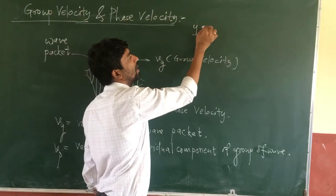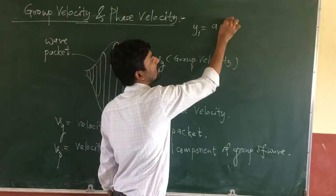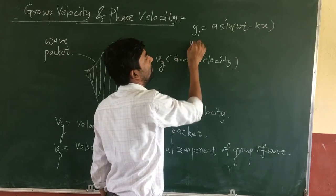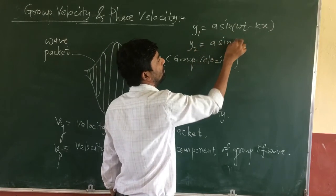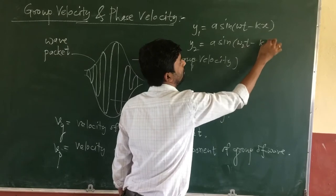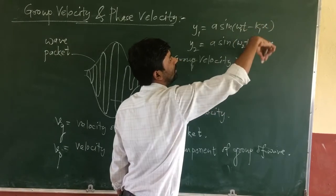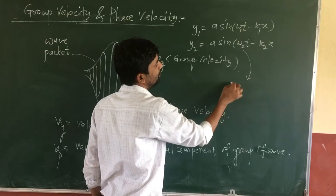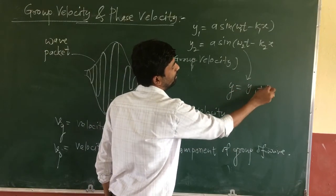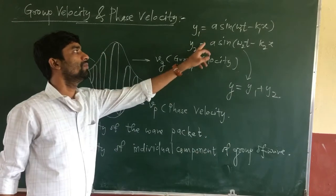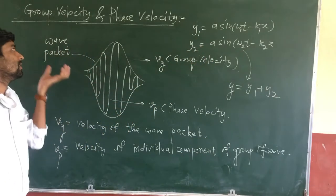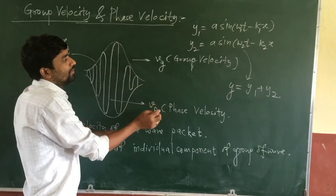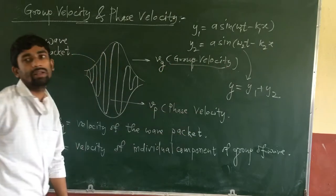If y1 is the first wave, we have the basic equation y1 = a sin(ω₁t − k₁x), and y2 = a sin(ω₂t − k₂x). When these two individual waves interfere with each other, they produce a wave packet, and this wave packet moves forward with a velocity. That velocity is known as group velocity.